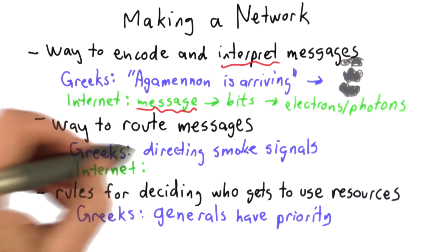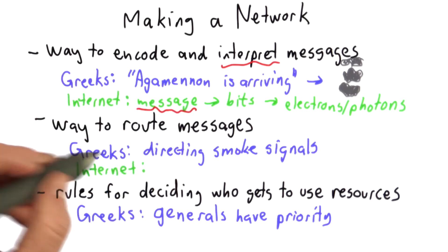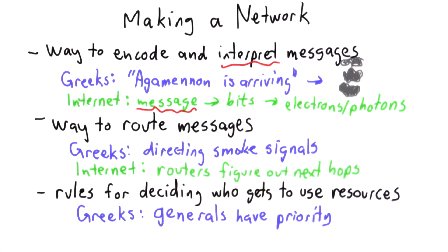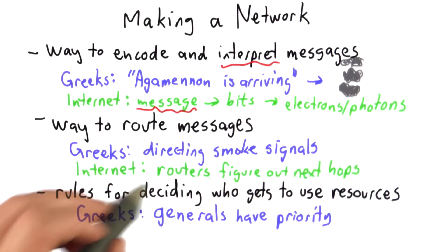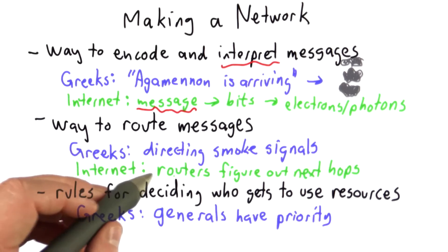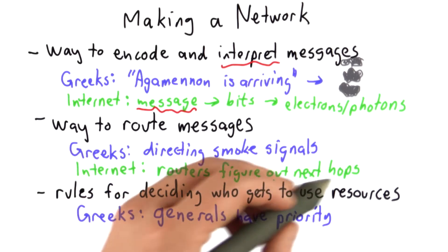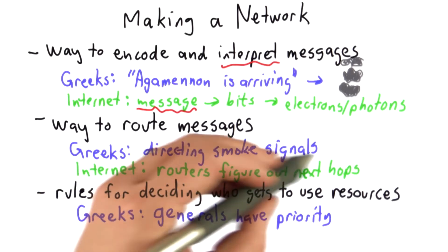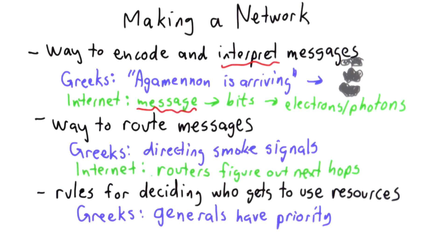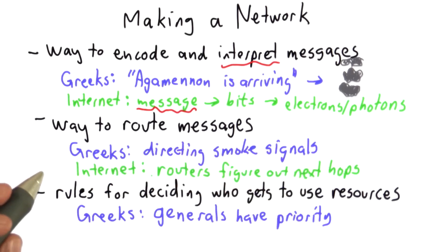As far as a way to route messages on the Internet, all of the routers along that path — when a message comes in, it has a destination. The routers have to figure out the next destination to go to. That's also quite a challenging problem, and it's something we're not going to get into more detail on in this class.